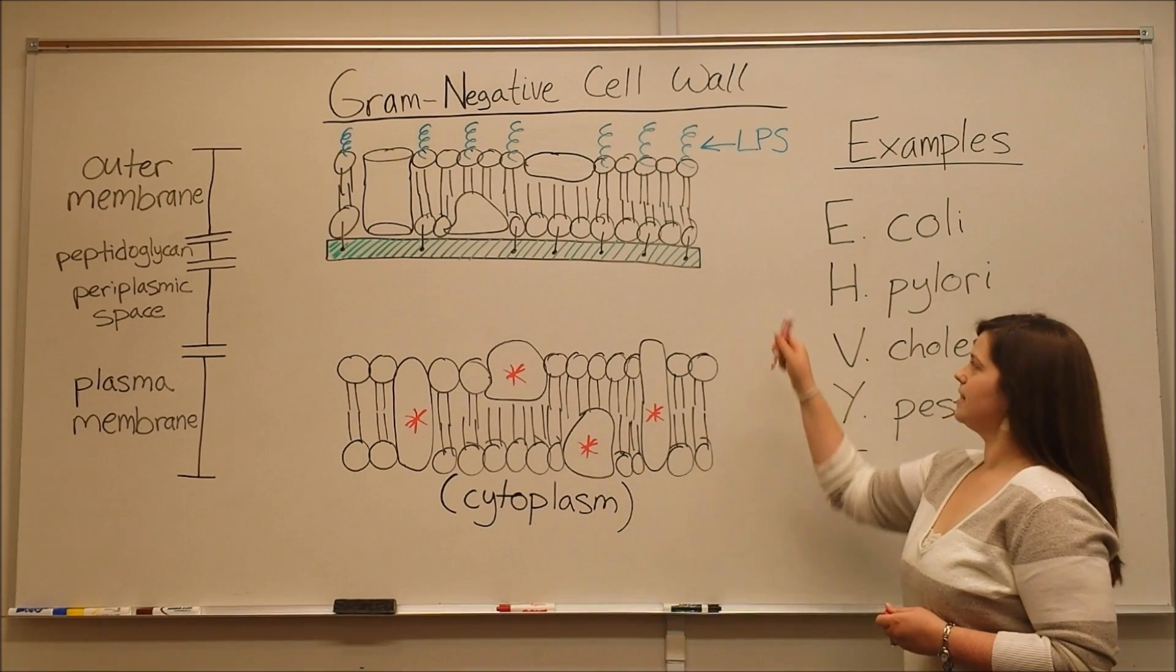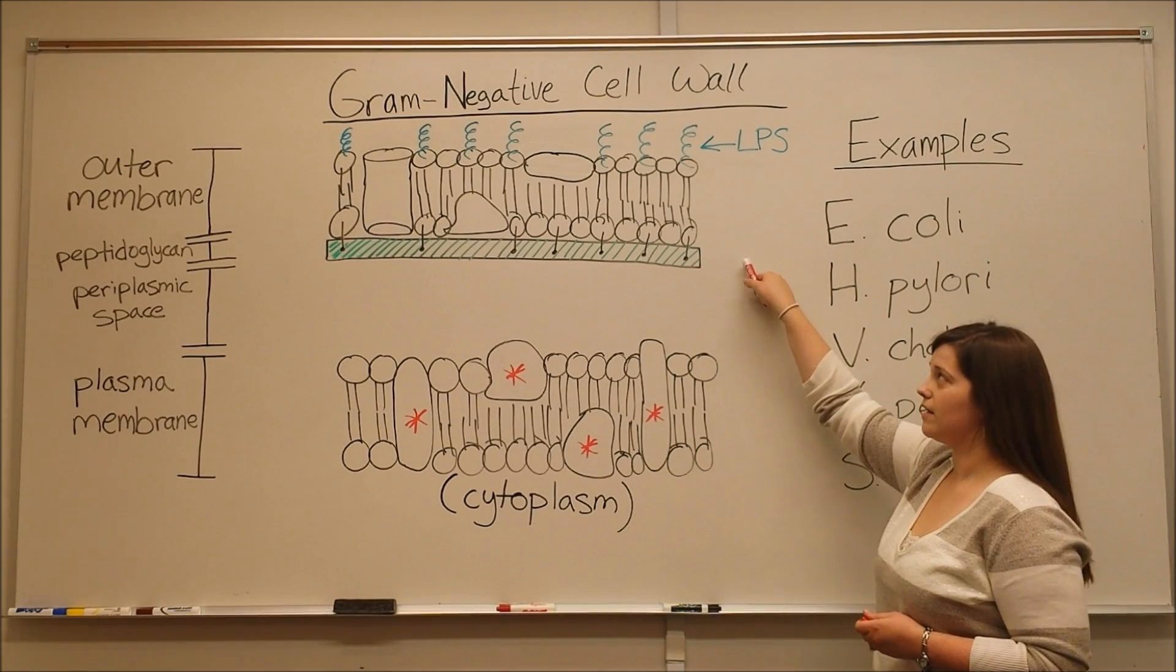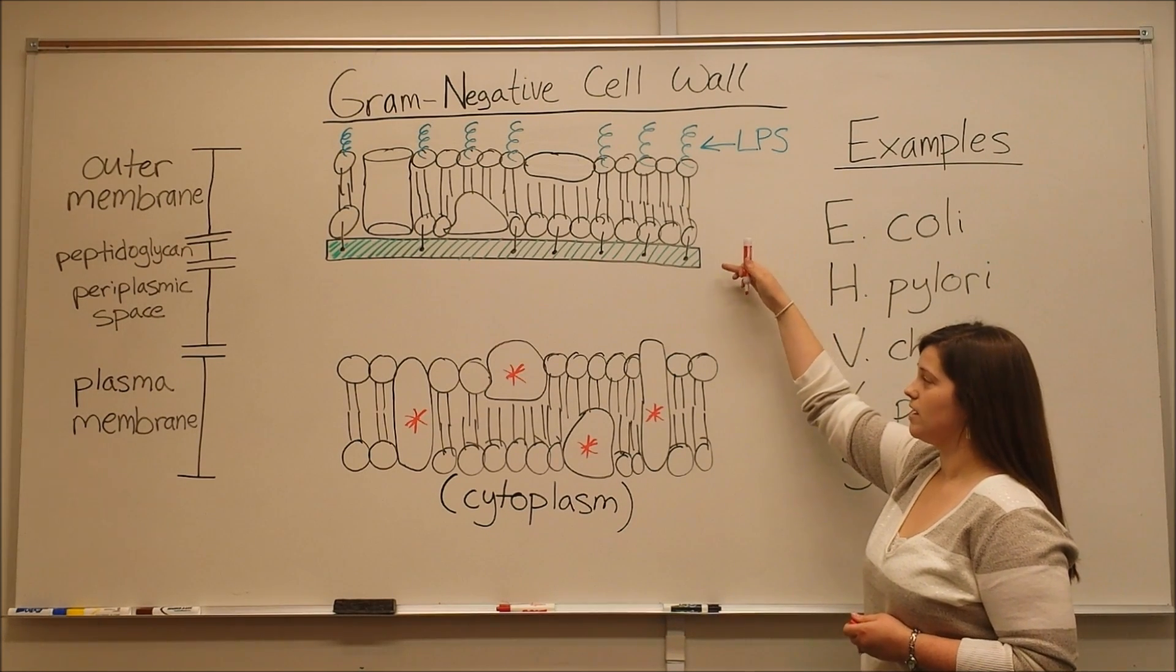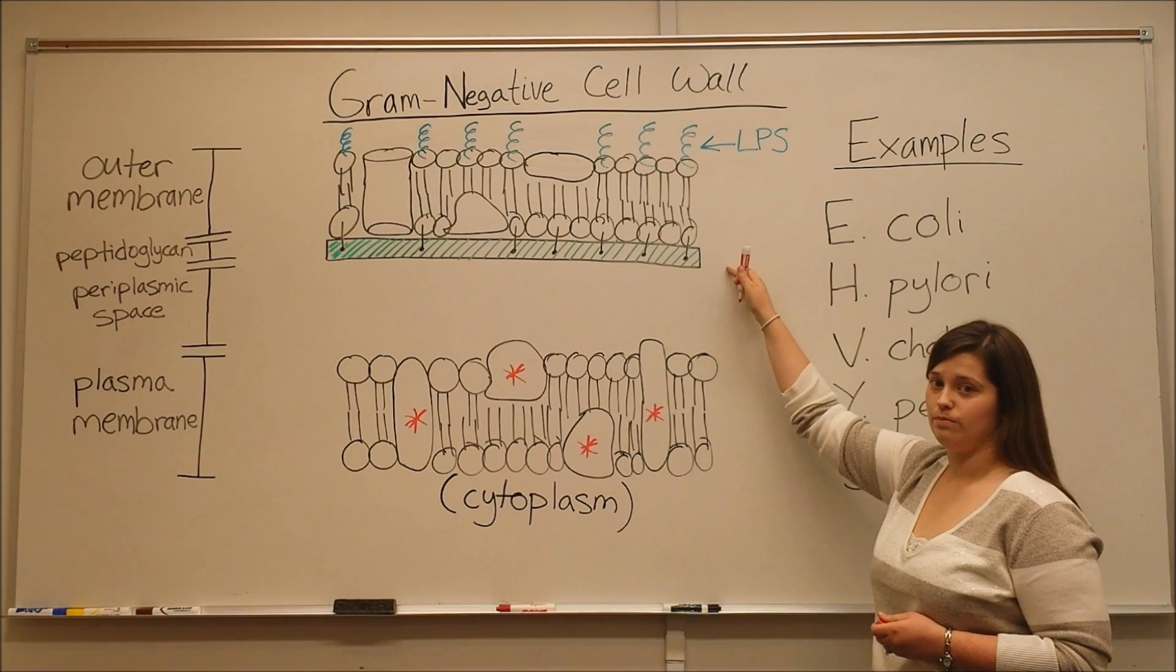There is still a layer of peptidoglycan. But you can see that compared to the gram positive peptidoglycan layer in gram negative cells, this peptidoglycan layer is much, much thinner.